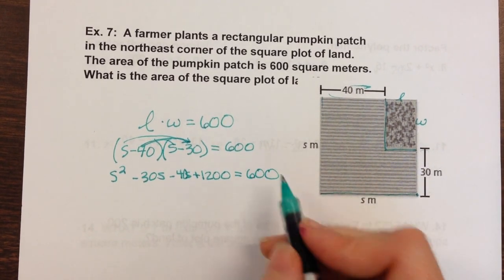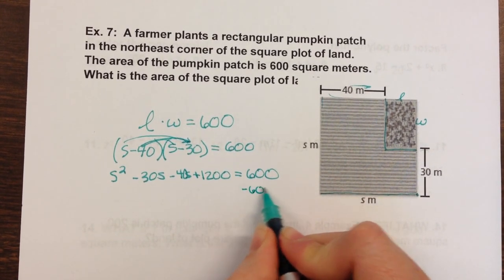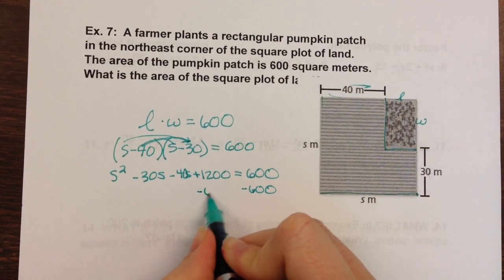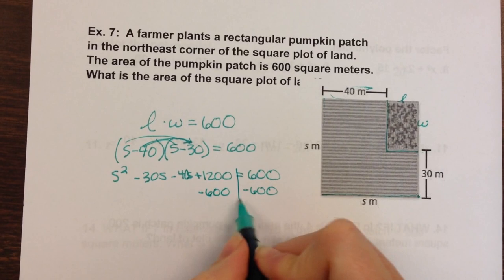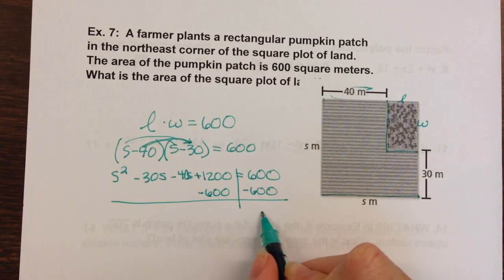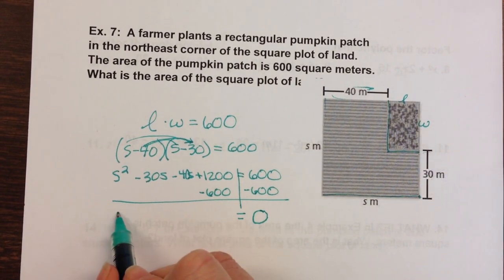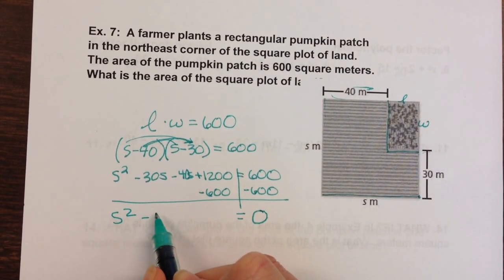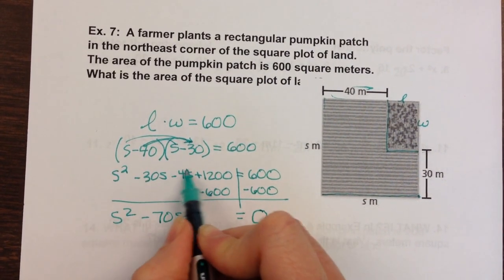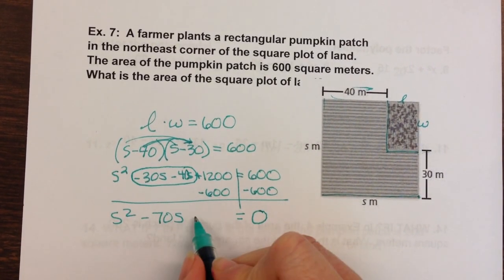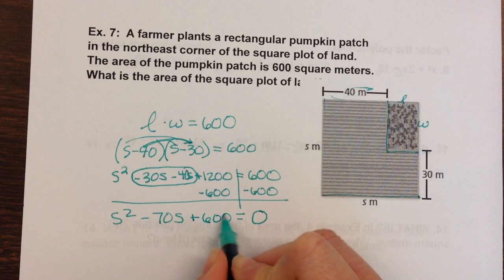And then I need to make this side equal zero. So to do that, I'd have to subtract 600 from both sides. And I'm going to subtract it right here, its like term. So now I have the zero, which means I can use the zero product property. And I have a polynomial on this side. I'm going to go ahead and combine those like terms: negative 70s plus 600.